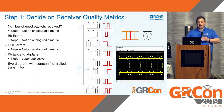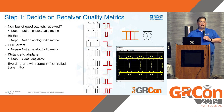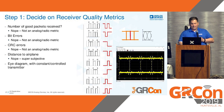The quality metric I used was actually an eye diagram, with a constant and controlled transmitter. If we look at three bits, we see there's always a rising or falling edge in the middle. If we put all these together and overlap them, we should see something like this. We want this middle piece to be as open as it can be because that gives us a good eye.